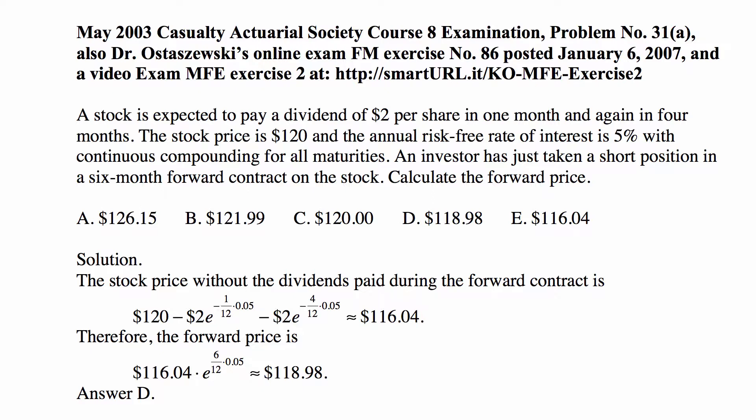In this case, the stock price without the dividends paid during the forward contract is $120 minus the present value of the two dividends of $2 each — one paid in one month and another in four months. We discount them today using a continuously compounded rate of interest of 5%. The first one is discounted over one month (one twelfth of a year) and the second over four months (four twelfths of a year). We get the prepaid forward, or ex-dividend price, of the stock to be $116.04.